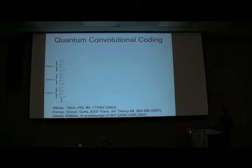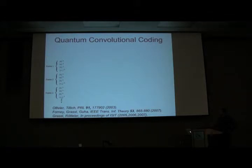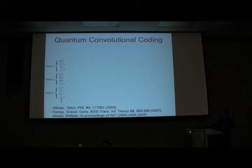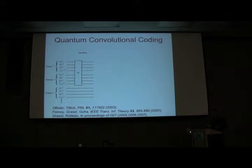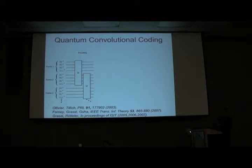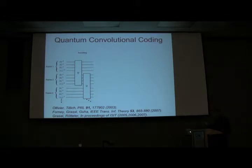For quantum convolutional codes — several people have established this area, including Olivia and Tillich, Forney, Marcus Grassl, and Martin Rettler. How these operate: you divide a qubit stream into frames. In each frame, you have a set of information qubits and ancilla qubits. Alice performs encoding unitaries that can overlap some of these frames, and this overlapping unitary gives the code a memory structure. The usefulness of having this convolutional structure is that you can use the same physical devices or routines to encode these codes.